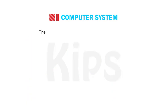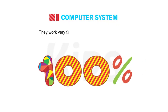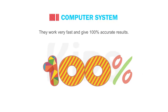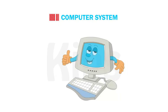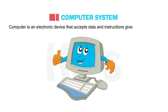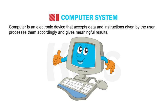They work very fast and give 100% accurate results. So we can define a computer as an electronic device that accepts data and instructions given by the user, processes them accordingly and gives meaningful results.